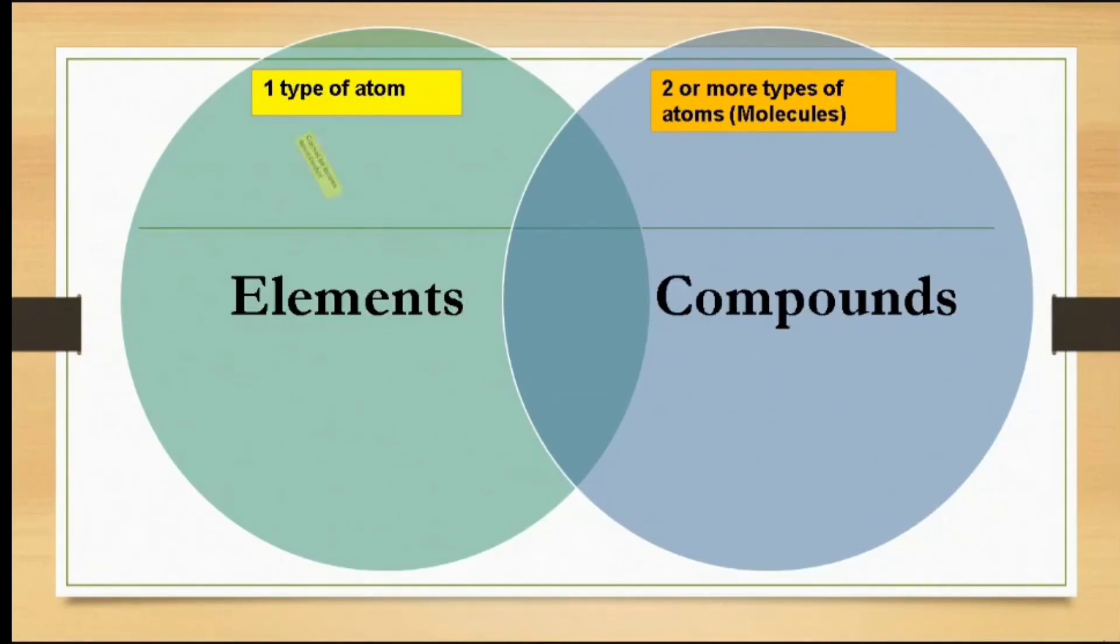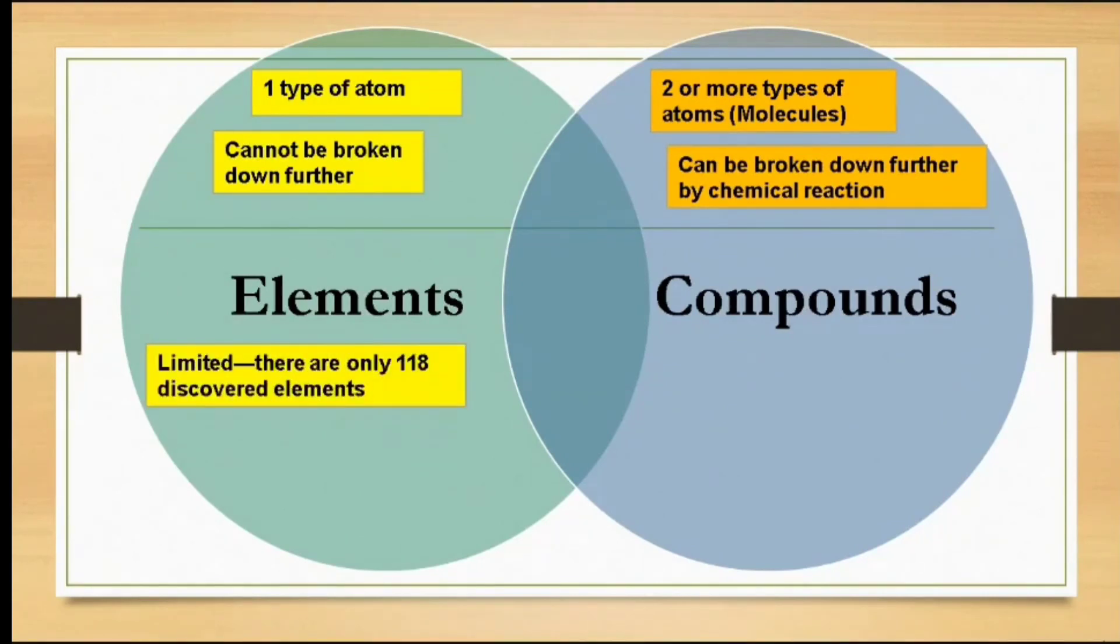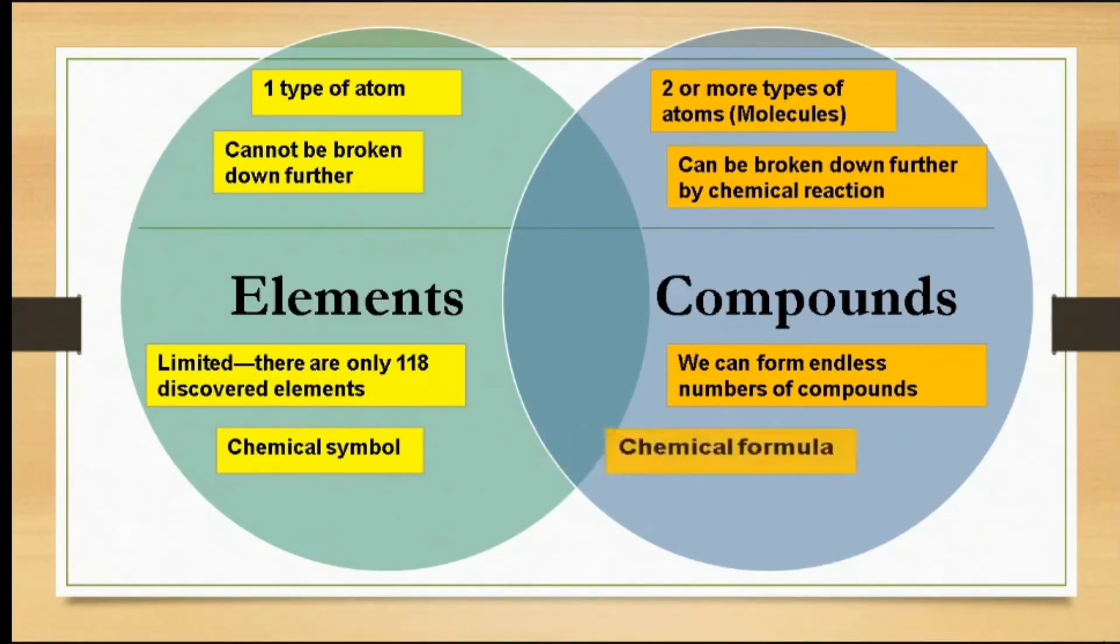Number 2, elements cannot be broken down further, while compounds can be broken down by chemical reactions. Number 3, elements are limited. There are only 118 discovered elements as of today, but we can form endless numbers of compounds by combining different elements. And number 4, elements are represented by chemical symbols, while compounds are represented by chemical formula.